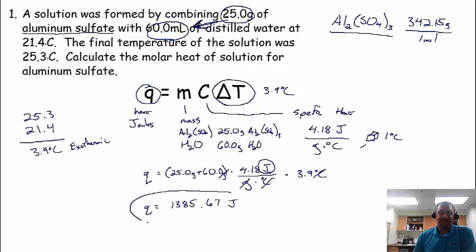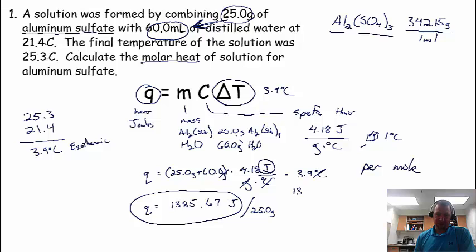That's how much energy was released when we dissolved 25 grams of aluminum sulfate into 60 milliliters of water. Now, that is not the answer. The answer they are looking for is the molar heat of solution. Molar means, if you see that, that means per mole. So we need to figure out, this was per 25.0 grams. So I'm going to rewrite this, and hopefully I have enough room here. 1,385.67 joules per 25.0 grams.